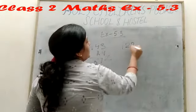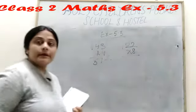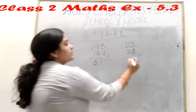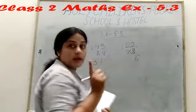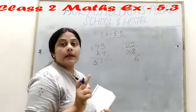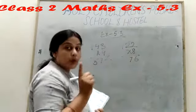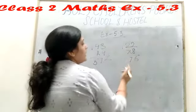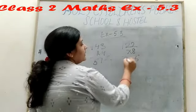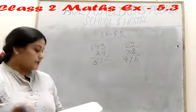One more question. 122 into 8. So 8 2 is 16. We can write here 6, 1 carry. 8 2 again 16 plus carry 1, 17. We can write here 7, 1 carry. 8 1, 8 plus carry 1, 9. Our answer is 976.